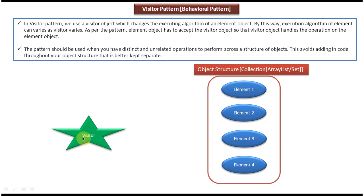We can define two Visitors. One Visitor will perform operation A on each element, and another Visitor will perform operation B on each element — that is also possible. As per this pattern, the Element Object has to accept the Visitor Object so that the Visitor Object handles the operation on the Element Object. Each and every element should accept the Visitor Object so that the Visitor can perform some kind of operation on the element object.